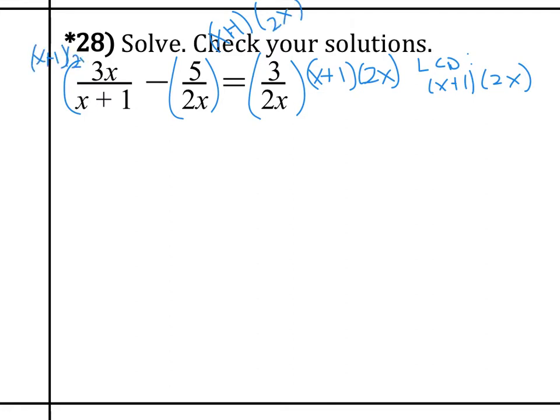Okay, so again, when we're solving, we want to clear the fraction. So notice, when we're multiplying x plus 1, 2x to the first term, the x plus 1 cancels. So now we're left with 2x times 3x minus, the 2x cancels, 5 times x plus 1 equals 3 times x plus 1.